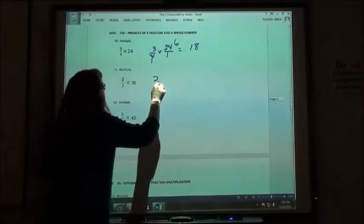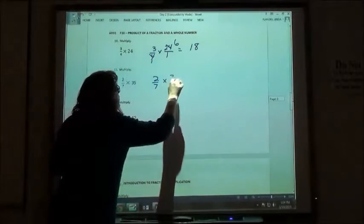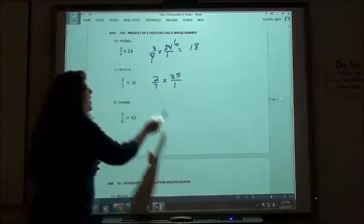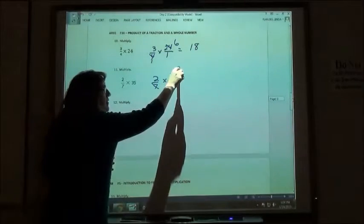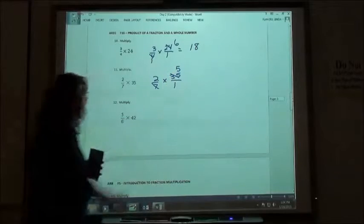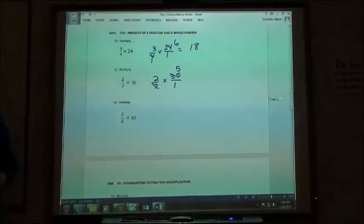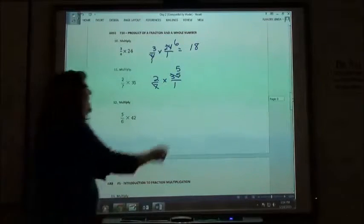So 2 sevenths of 35. 7 divides into 35, everybody all at one time, 5. And then I can multiply. 2 times 5, 10.